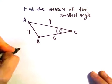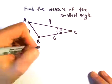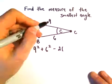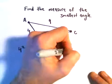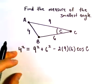Well, we can use law of cosines. So 4 squared, that would equal 9 squared plus 6 squared minus 2 times 9 and 6. And then that's going to help us bring in our cosine of the angle C.